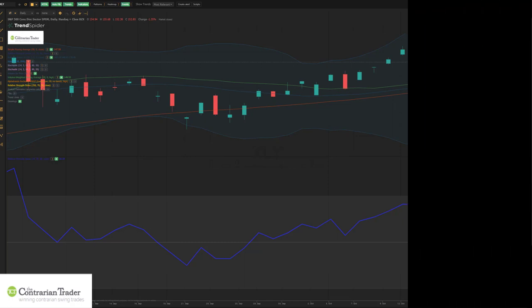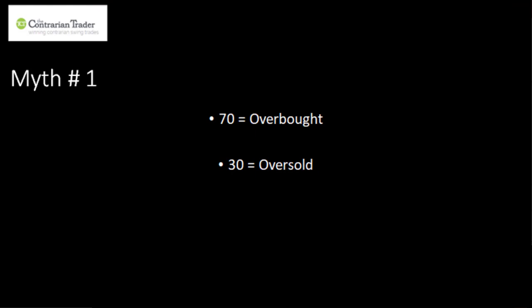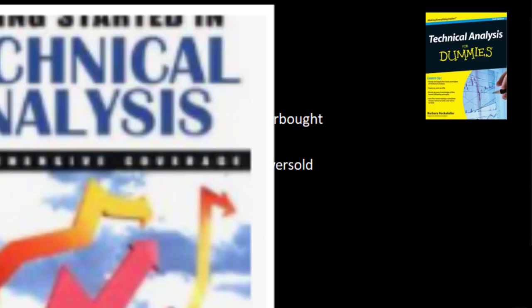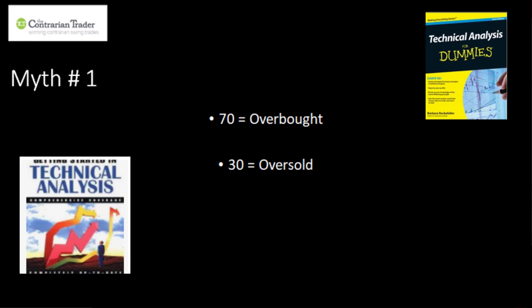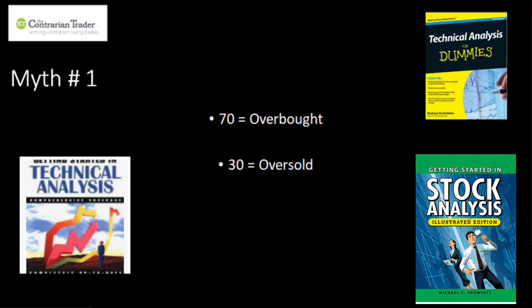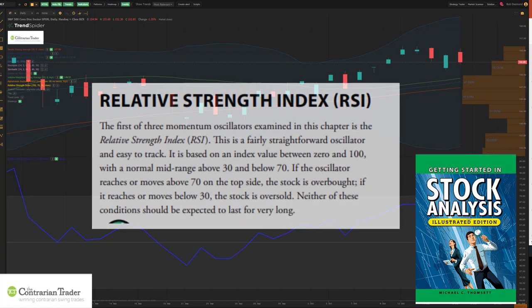Now I want to segue into myth-busting. There are three key myths I want to dismiss to help you become a more powerful trader by being better advised on how to use RSI in the 21st century. The first myth is: 70 equals overbought, 30 equals oversold. This is very outdated information that I've seen in Technical Analysis for Dummies, Getting Started in Technical Analysis by Jack Schwager — a very good book, but a little out of date.